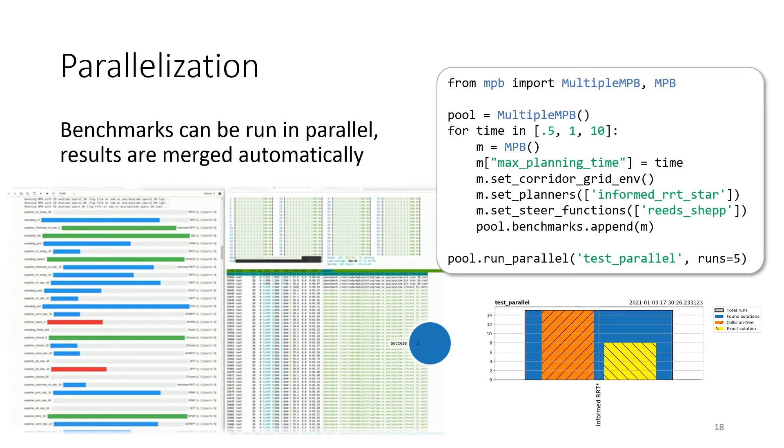BenchMR supports parallelized benchmarking out of the box. By instantiating a multiple MPB instance and adding MPB instances, such as the one you have seen before, benchmarks will be automatically executed in parallel.